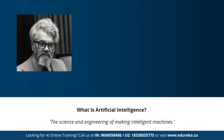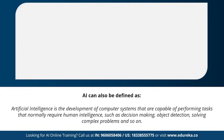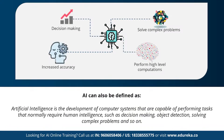The term artificial intelligence was first coined by John McCarthy, who defined AI as the science and engineering of making intelligent machines. In other words, AI can be defined as the development of computer systems capable of performing tasks that require human intelligence, such as decision making, object detection, and solving complex problems. AI helps in decision making, solving complex problems, performing high-level computations, and increasing the accuracy of predictions.